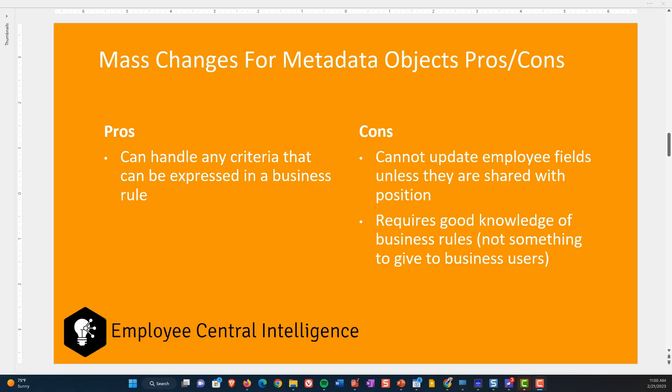The pros of mass changes for metadata objects: it can handle any criteria that can be expressed in a business rule. If you can come up with an if-then statement based on the attributes of a position, this is the tool for you. The cons: you cannot update employee fields unless they are shared with a position — same limitation as before. It also requires good knowledge of business rules. It's a very powerful but potentially dangerous tool if you don't know what you're doing, so it would be used by a smaller subset of your organization, not rolled out widely.